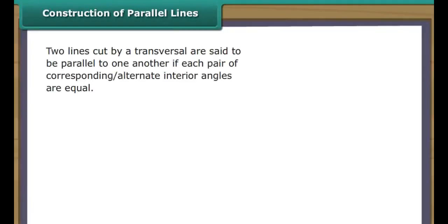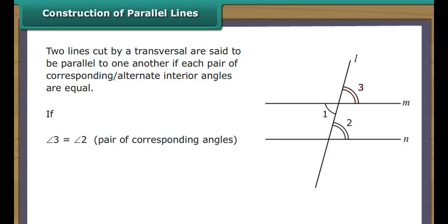Construction of Parallel Lines. Two lines cut by a transversal are said to be parallel to one another if each pair of corresponding alternate interior angles are equal. In the figure, if angle 3 is equal to angle 2 or angle 1 is equal to angle 2, line M is said to be parallel to N.